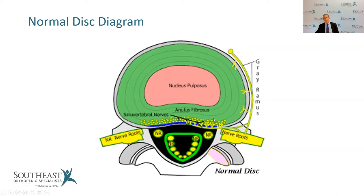Newer treatments for managing disc discomfort, annular tears, and structural damage include stem cell and PRP injections in the disc. Ongoing research is pretty hopeful: 60-70% of people undergoing those studies who would normally get a spinal fusion because of persisting disc pain end up not having to get surgery.